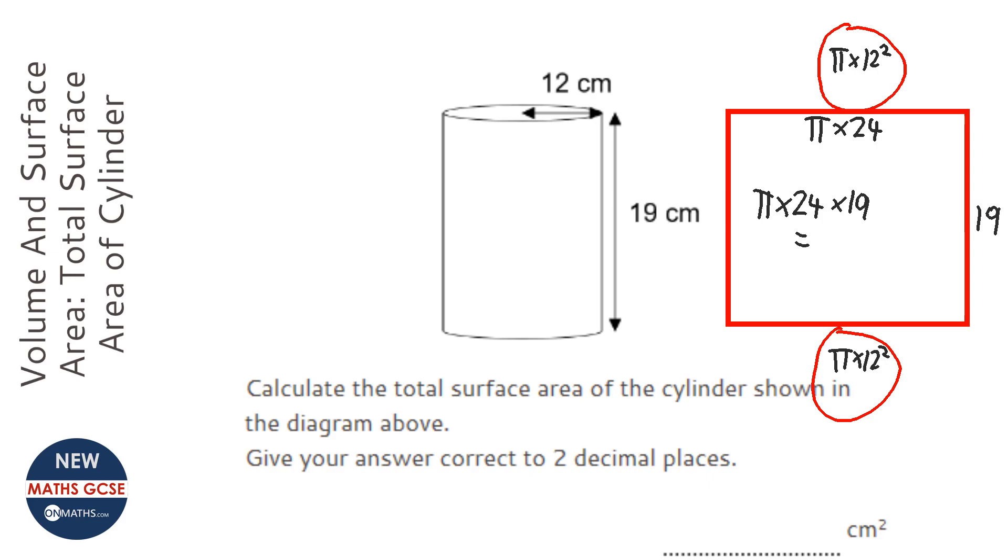So let's work those all out. So pi times 24 times 19. I'm going to do these in terms of pi, so I keep the accuracy.